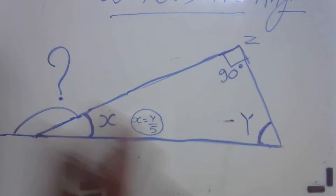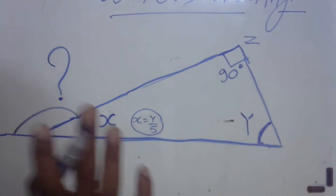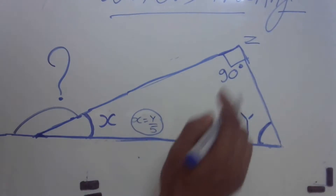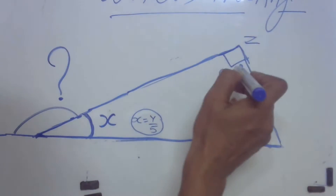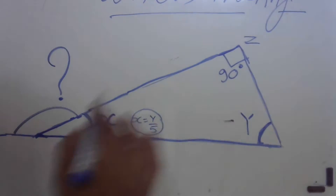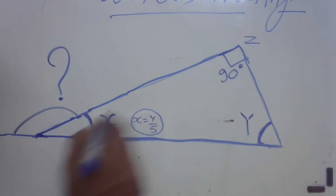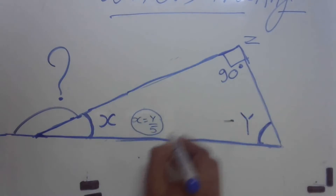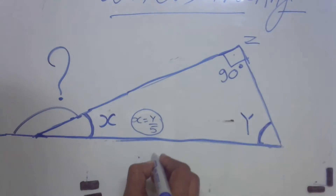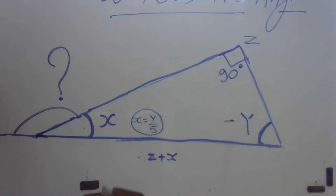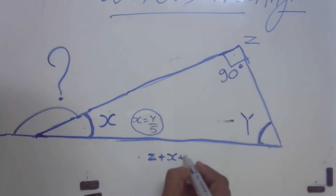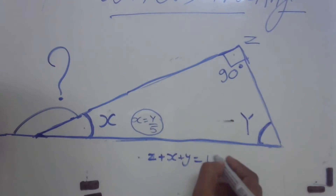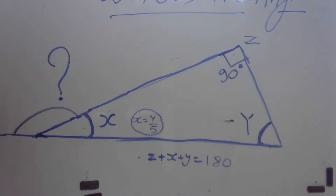Okay, forget everything for now. You all know that the internal angles of a triangle sum up to 180 degrees. Say this is one angle, we call it z; this is one angle, we call it x; this is one angle, we call it y. If I add all these angles together, it will be a straight line — 180 degrees.